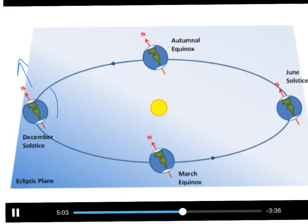As we move to the other side and get to summer, we're tilting into the Sun, so the sunlight hits us much more directly, it's more intense, and so it's hotter. Over here in the fall and in the spring, we're getting neither direct nor indirect sunlight, so we're getting neither hot nor cold temperatures as a result.